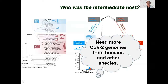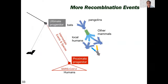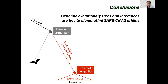The question of who the intermediate host was remains open. Like SARS-CoV-1, where it took years to identify civets as the stepping-stone species, we need many more coronavirus genomes from humans and other species — farms in China and elsewhere, banked human samples — to understand the real diversity and identify any intermediate host. We do not yet know if an intermediate species was actually needed. More data from humans near the pandemic's start, other mammals, and more pangolins will help.